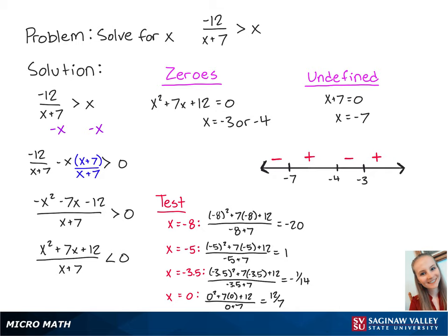To make the inequality a true statement, the left side must be less than 0. This means that x must be less than negative 7 or between negative 4 and negative 3. So x ranges from negative infinity to negative 7, exclusive, or negative 4 exclusive to negative 3 exclusive.